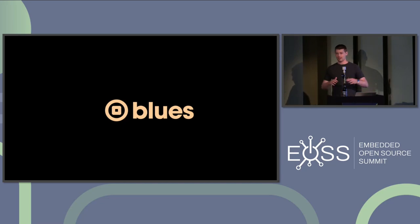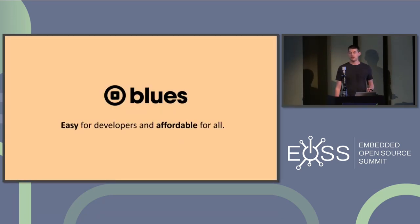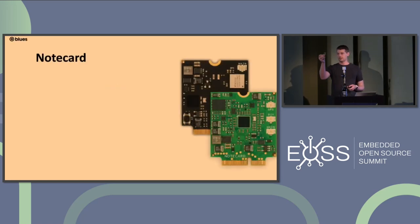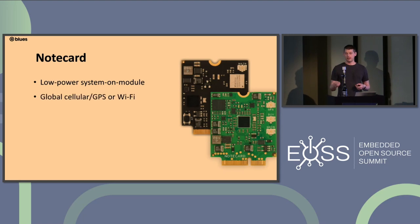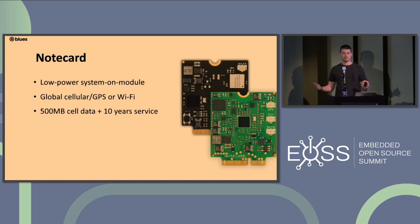To give you background on why we care, we work for a company called Blues. At Blues, we try to make IoT development easy. We pride ourselves on making the embedded experience as easy as possible. The primary product we make is called the Notecard — a low-power system-on-module that provides global cellular connectivity and GPS. The Notecard's claim to fame is that it comes with 500 megabytes of cell data and 10 years of service, so you don't have to sign up for a cell provider or pay subscription fees. It also has a JSON API — instead of working directly with a cellular modem, you send JSON to the Notecard over serial or I²C.